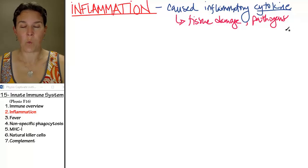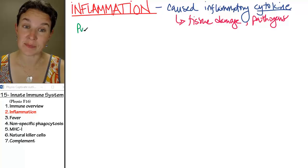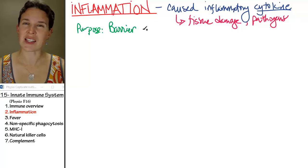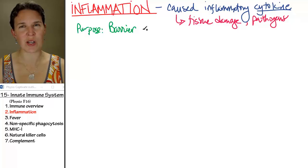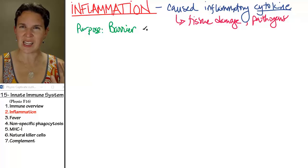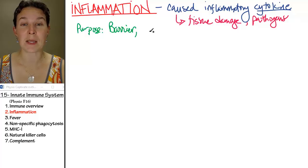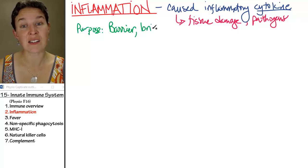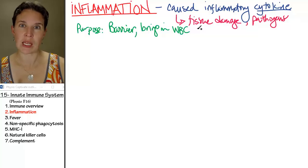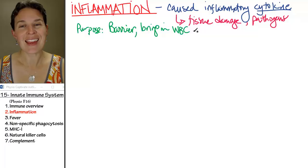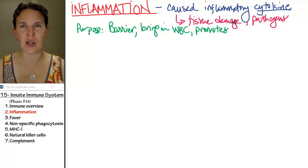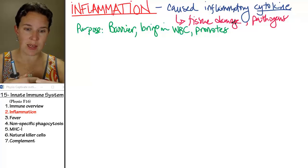Tissue damage can lead to inflammatory cytokines, but so can pathogens or invaders — anything that's going to cause some kind of disease. Why do we have an inflammatory response? Inflammation actually creates a barrier. If you get a splinter, you have an inflammatory response to it that creates a barrier between the splinter and the rest of your body, which can prevent the spread of bad guys. It also brings in white blood cells, which are the main doers of the immune system. And the inflammatory response promotes healing — the chemicals released help initiate the healing process.